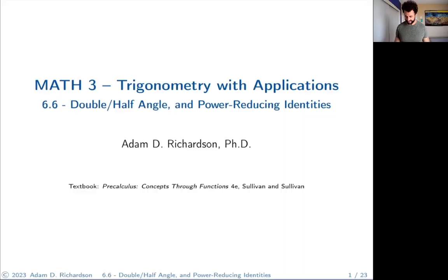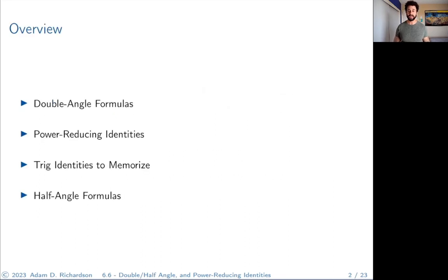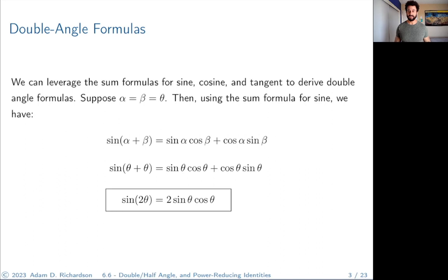Welcome back. Today we're doing section 6.6, which covers the double angle formulas, the half angle formulas, and the power reducing identities. Here's the overview: we'll derive the double angle formulas, then the power reducing identities, then a list of six trigonometric identities that you absolutely need to memorize. After that we'll get the half angle formulas.